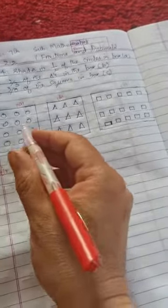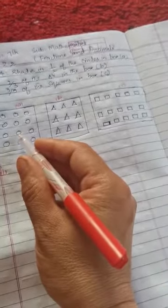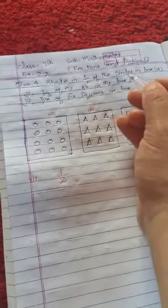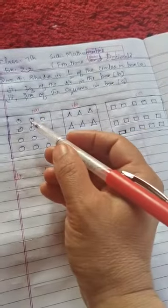The first part says half of the circles in box A. We have circles in box A. Half means one upon two, so we multiply one upon two by the total circles in box A. Count how many circles are in box A for this multiplication.